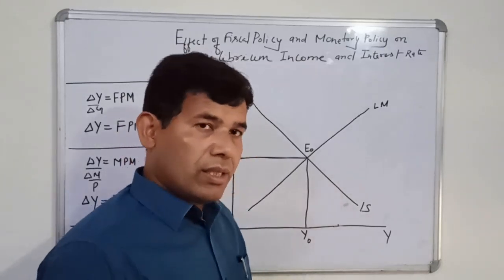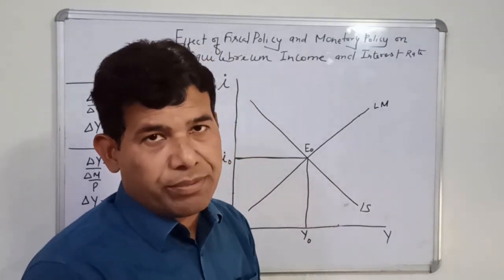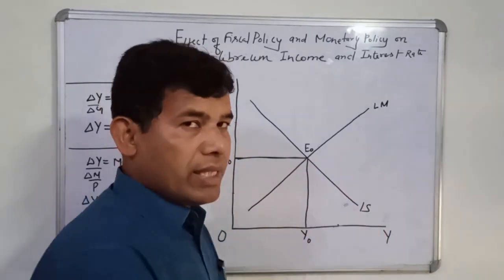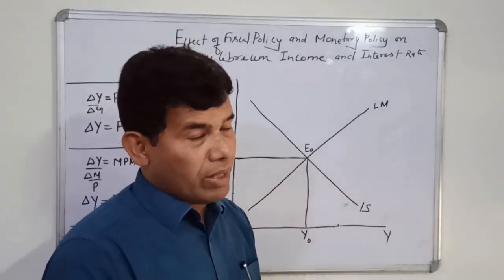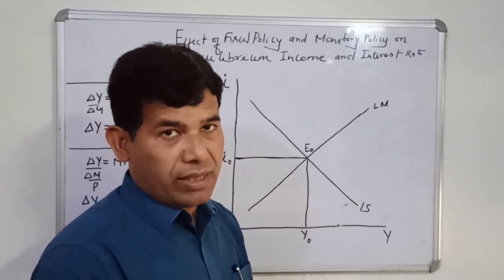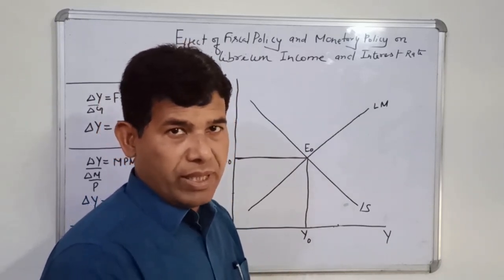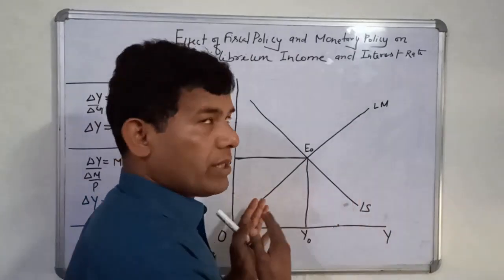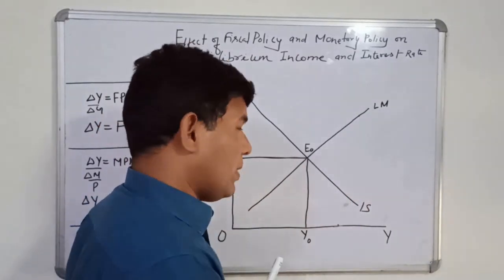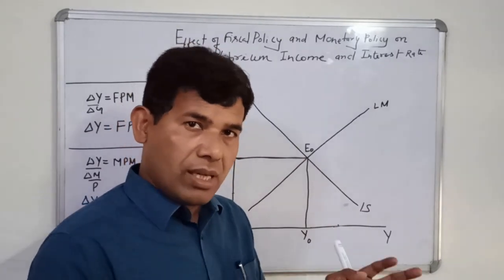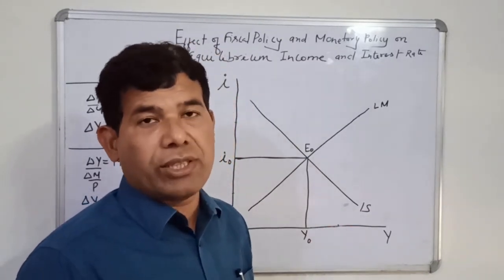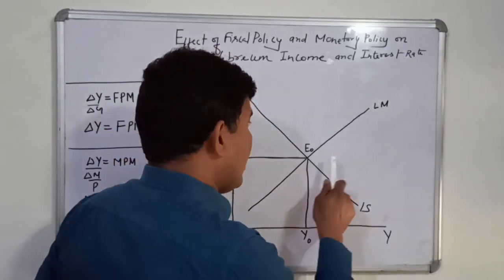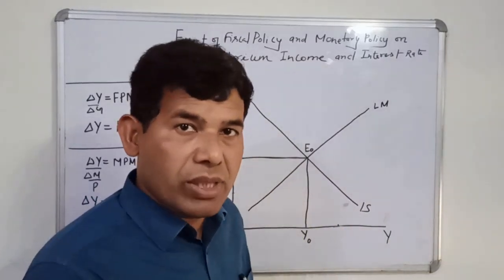Suppose government expenditure rises in the economy. When government expenditure rises, the IS curve will shift rightward. We have already studied and discussed what are the factors which affect the location of the IS curve. It is the autonomous components of aggregate demand which influence the location of the IS curve without affecting the slope, and government expenditure is one component of those autonomous components of aggregate demand. So if government expenditure rises, the IS curve will shift rightward.